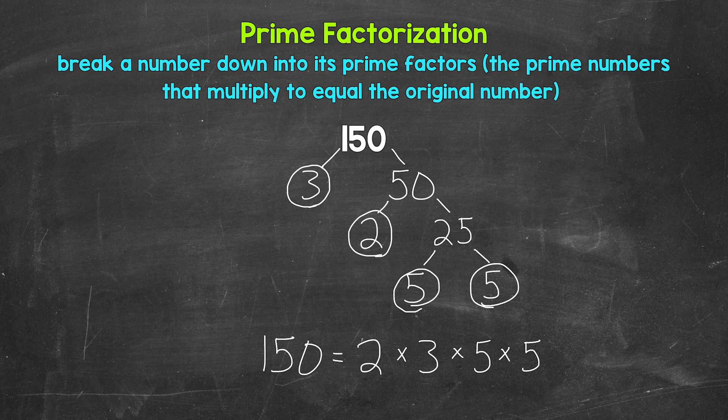So let's check here. 2 times 3 is 6. Times 5 is 30. Times 5 is 150. So we are correct here.